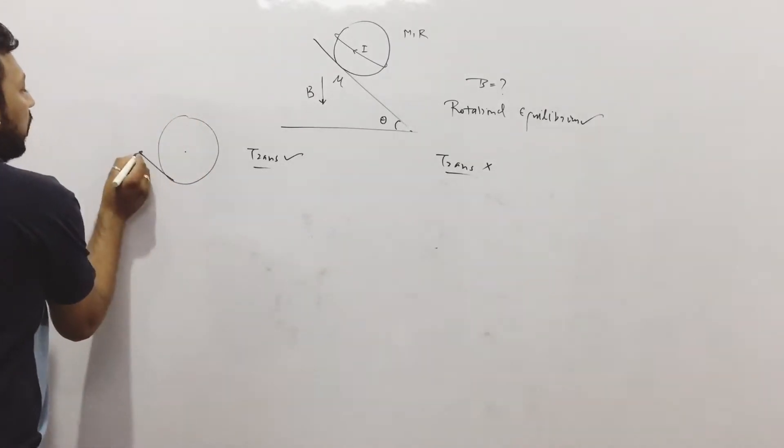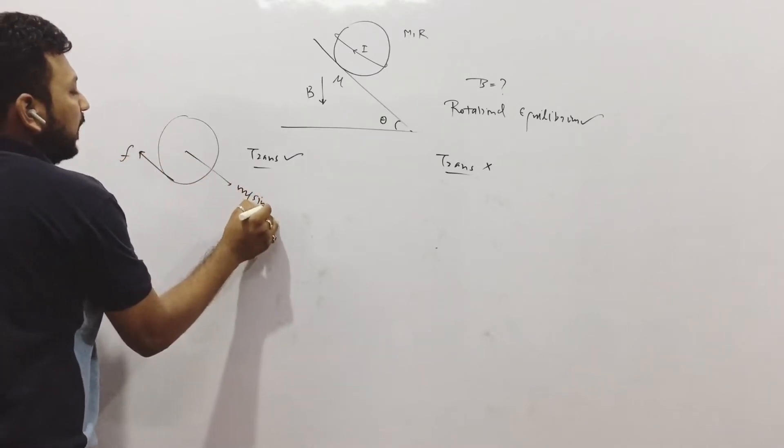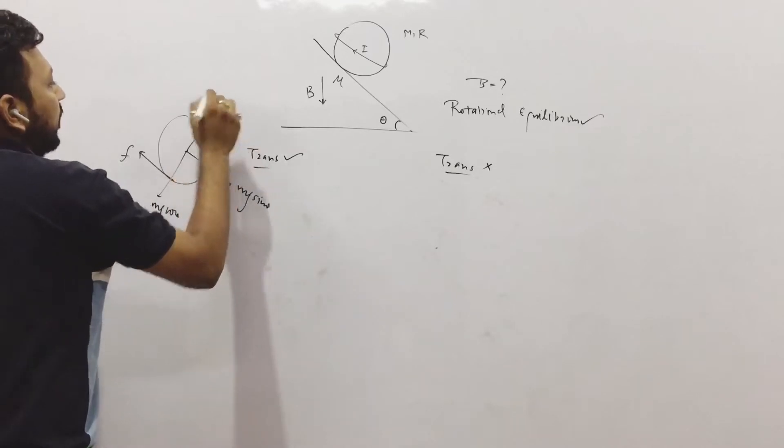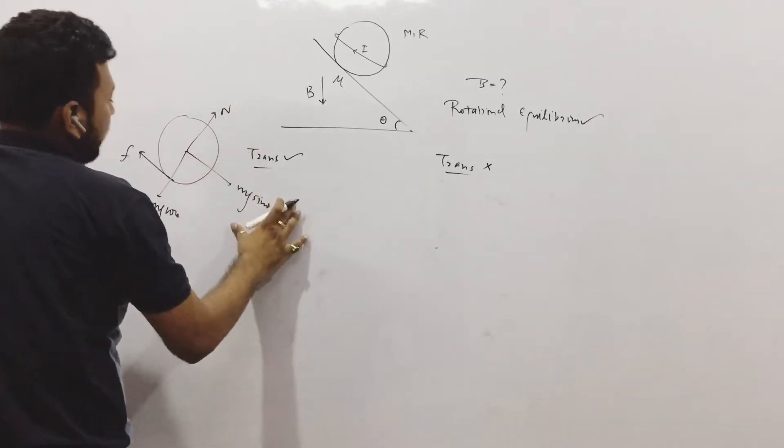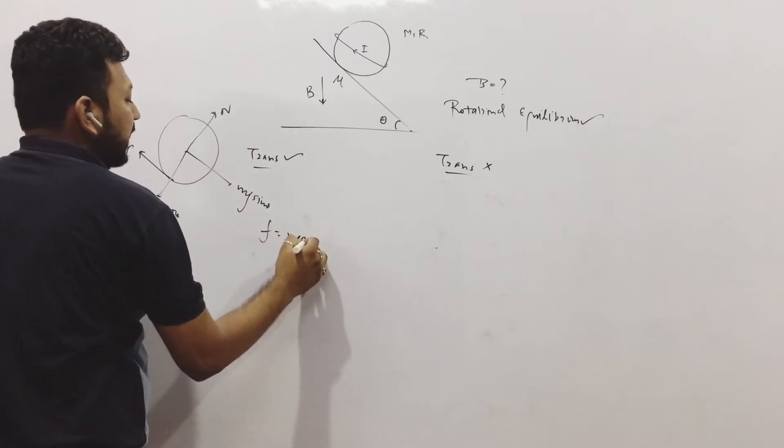If it is not moving at all, the friction here is upwards, Mg sin theta, Mg cos theta, normal reaction. If it is not moving then friction is Mg sin theta.